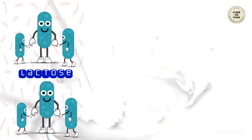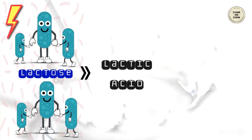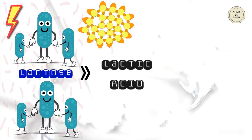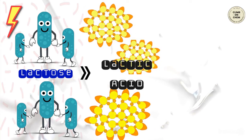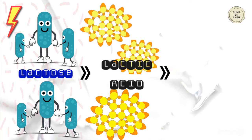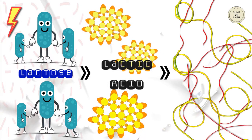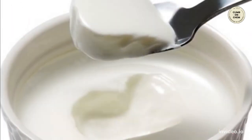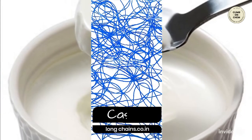The lactose sugar in the milk is consumed by the lactobacillus bacteria from the inoculum for producing energy. A lot of lactic acid is produced in the mixture as a by-product. This acid acts on the globular casein already present in the milk, disrupting its globular structure and forming long chains of casein, which get entangled into each other. So the next time you have curd, you'll know it's nothing but entangled long chains of casein.